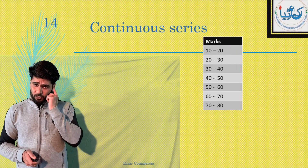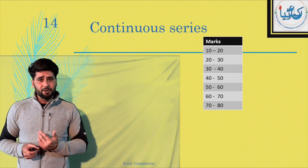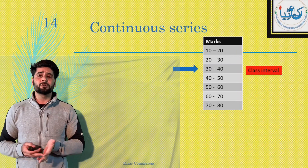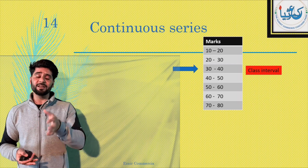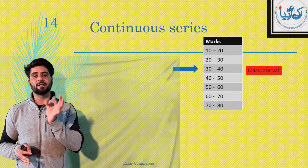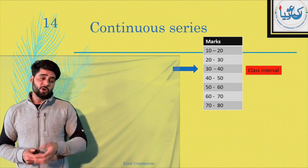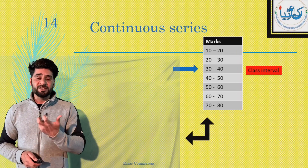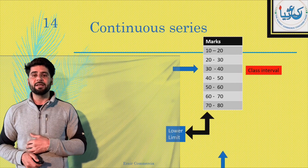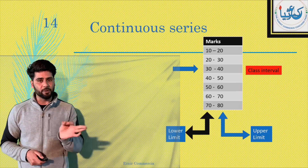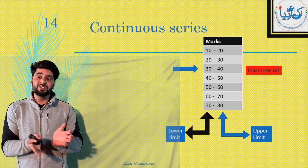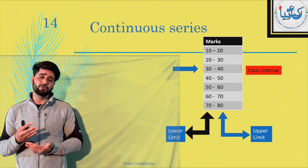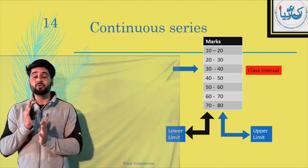In the continuous series, 10 to 20, 20 to 30, 30 to 40, 40 to 50, 50 to 60, 60 to 70, 70 to 80 — inhe kehte hai class interval. Say we are talking of 20 to 30 — 20 to 30 is a class interval. If we are talking of 70 to 80 — toh 70 ko kahenge lower limit, aur 80 ko kahenge upper limit. If we are talking of 40 to 50 — 40 is lower limit and 50 is upper limit. If we are talking of 10 to 20 — 10 is lower limit and 20 is upper limit.